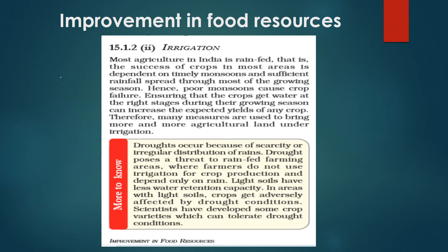Droughts occur because of scarcity or irregular distribution of rains. Drought poses a threat to rain-fed farming areas where farmers do not use irrigation for crop production and depend only on rain. Light soils have less water retention capacity, and in areas with light soil, crops get adversely affected by drought conditions. Scientists have developed some crop varieties which can tolerate drought conditions.